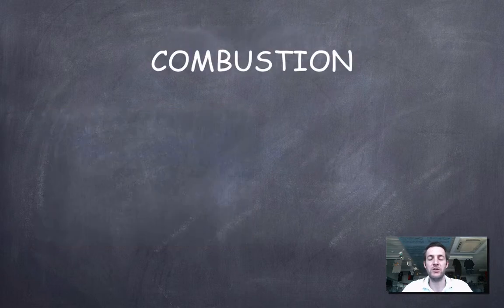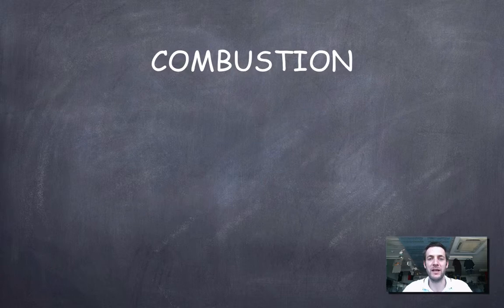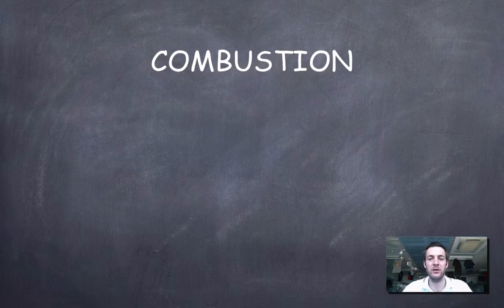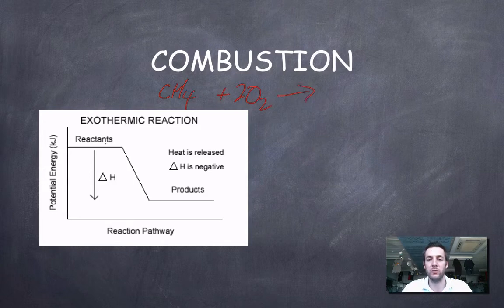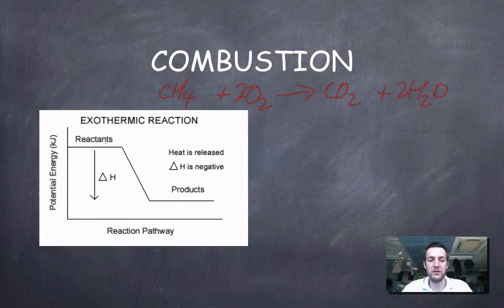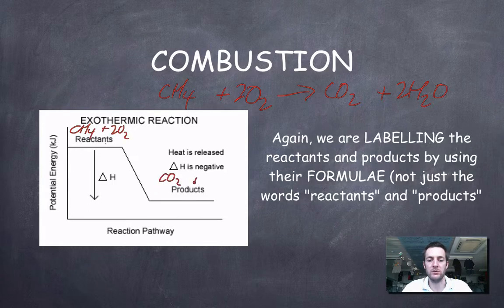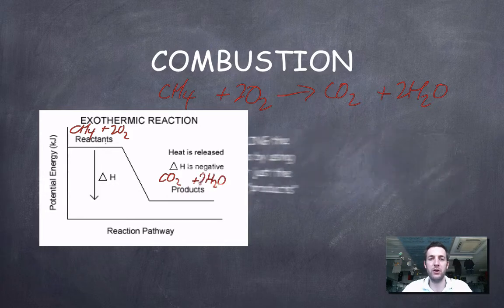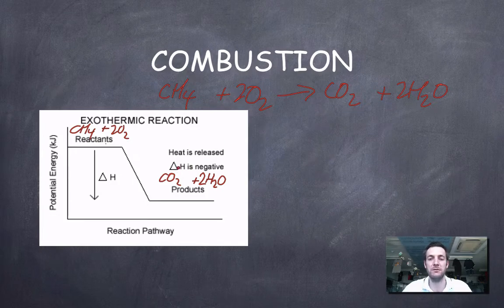Now then, combustion. Combustion is, if you want to call it a fancy name, it's a fancy name for burning. And most people are fairly happy with the fact that burning reactions get hot. They release a lot of heat. And anything that releases heat, as we know, is exothermic. So if I imagined a combustion reaction, for example, that of methane with oxygen turning into carbon dioxide and water, then my reactants would be methane and oxygen, and my products would be CO2 and two water molecules. And because this releases a lot of heat, the enthalpy of the system must be falling, because that enthalpy must be being converted into heat. So combustion is always exothermic, and delta H will always be negative for combustion reactions.